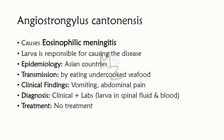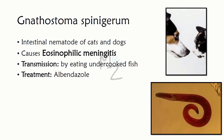Treatment: there is no treatment; most patients recover spontaneously without major sequelae. Eosinophilic meningitis is also caused by larvae of two additional nematodes. The first is Gnathostoma spinigerum, an intestinal nematode of cats and dogs, acquired by eating undercooked fish, treated with albendazole.